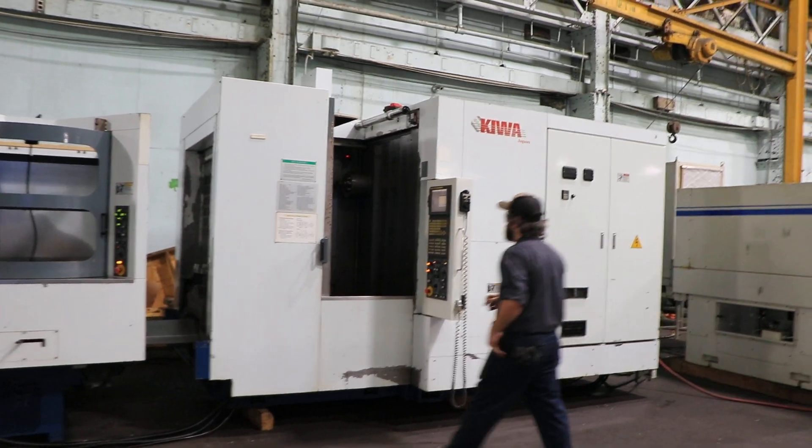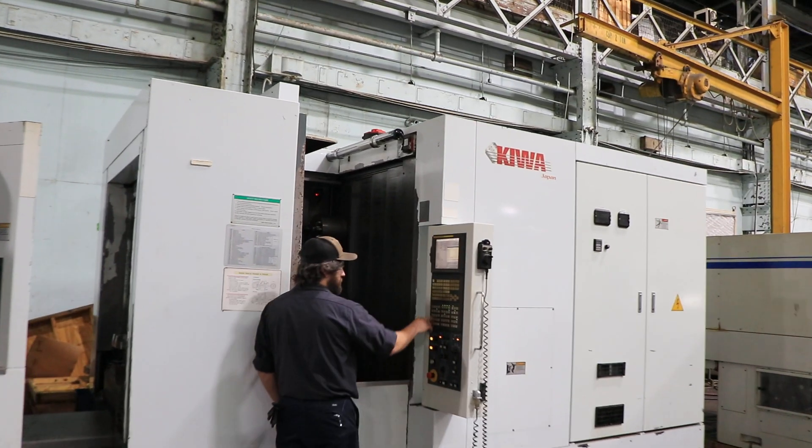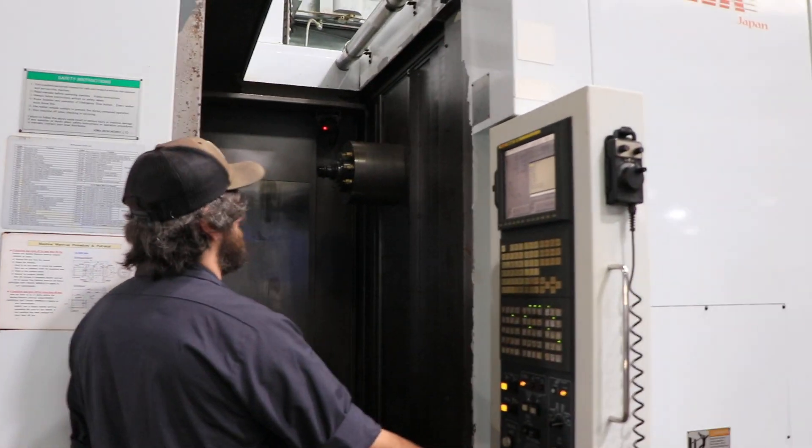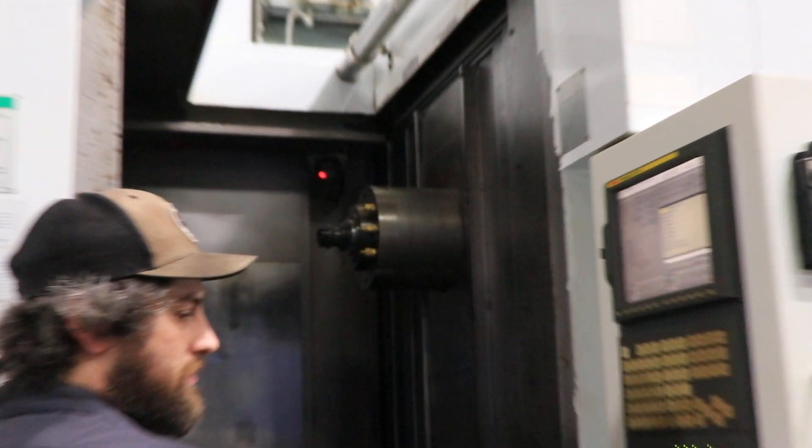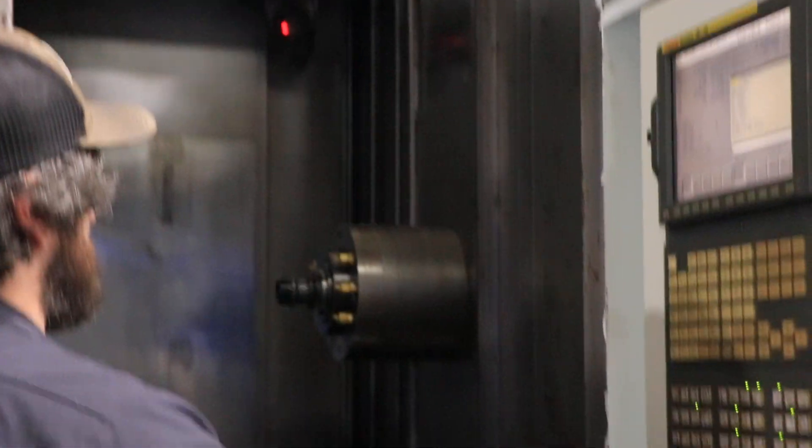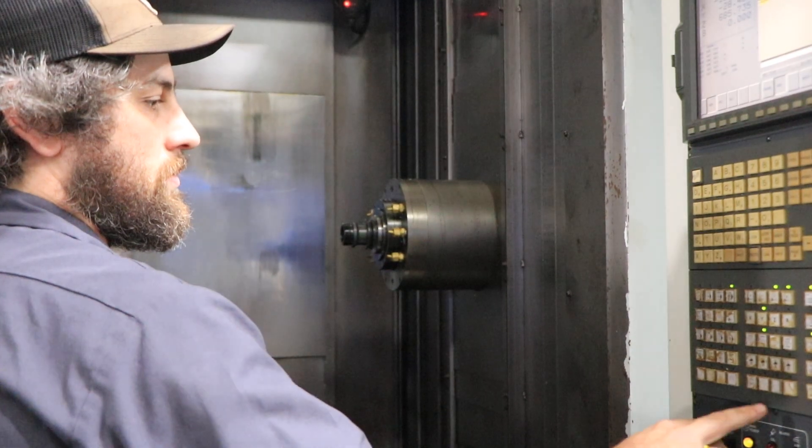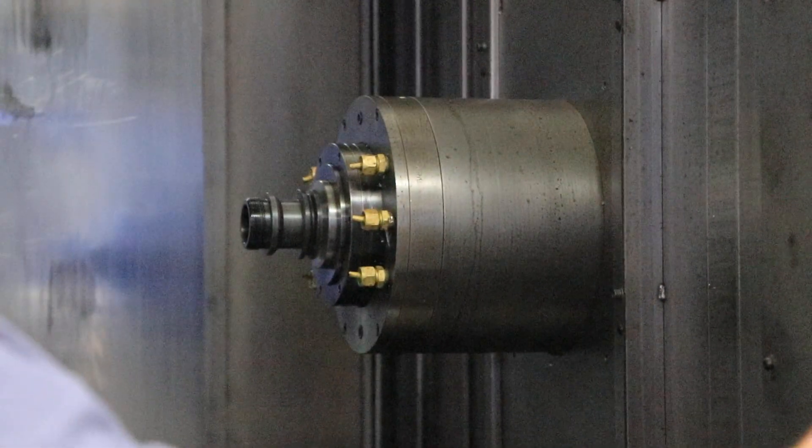So you have a FANUC 18IMB 4-axis control. This machine is equipped with 6-palette pull, as well as the pallet in the machine, which is 15.7 by 15.7 or 400mm.